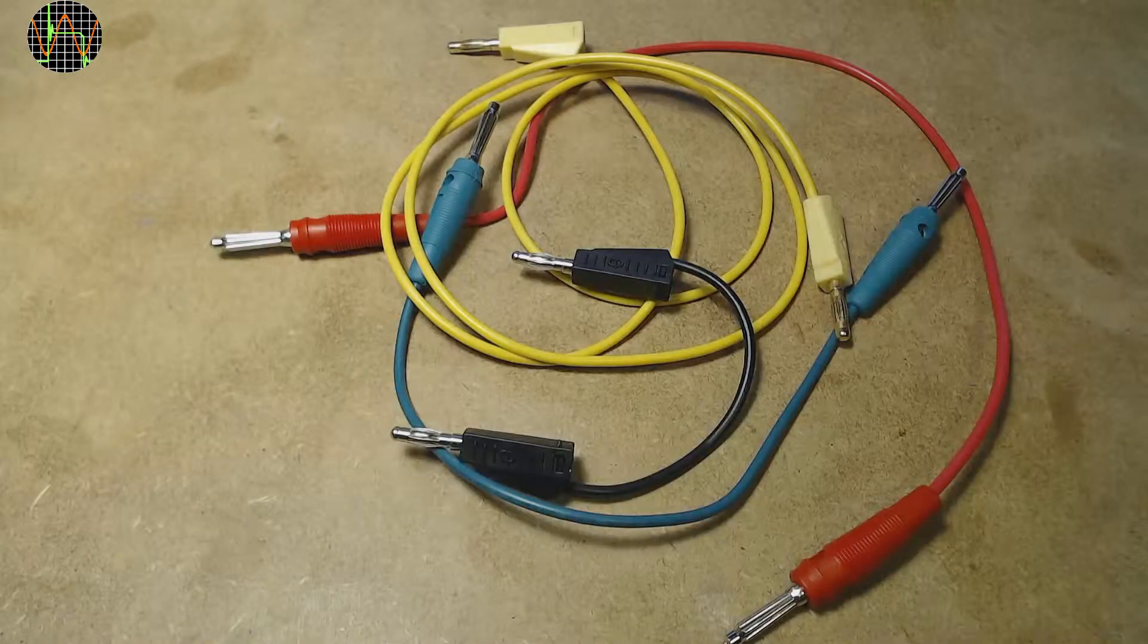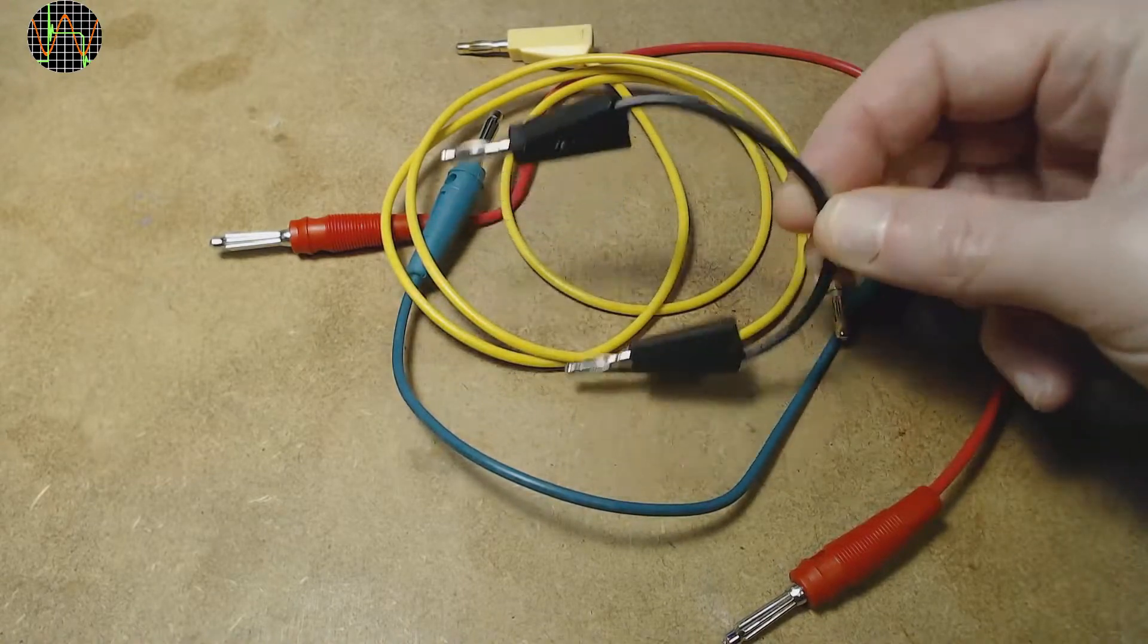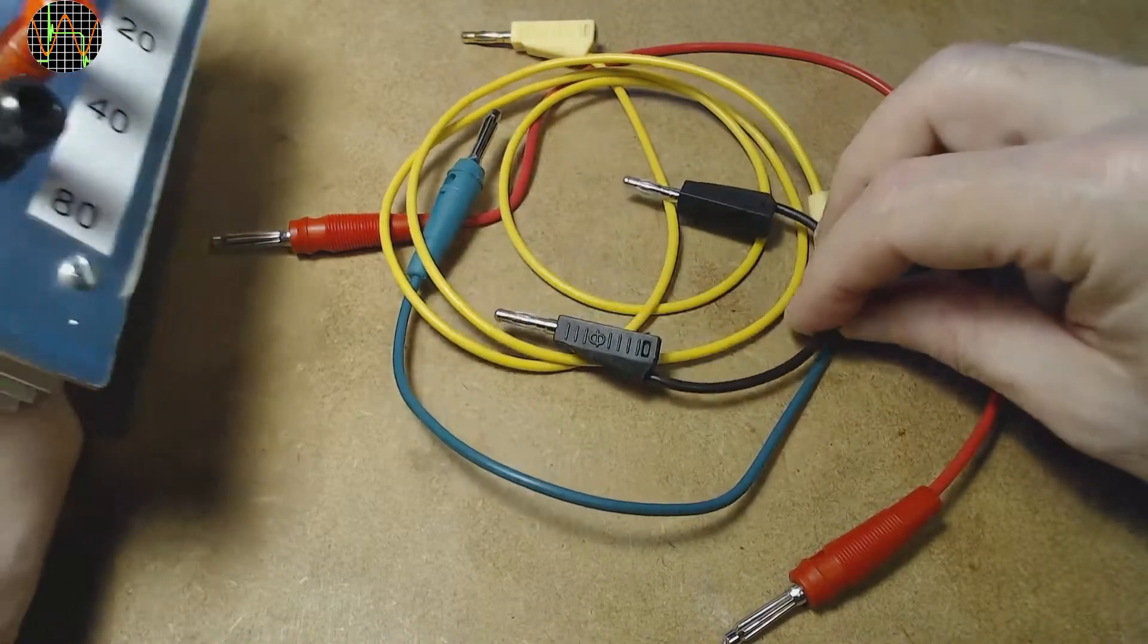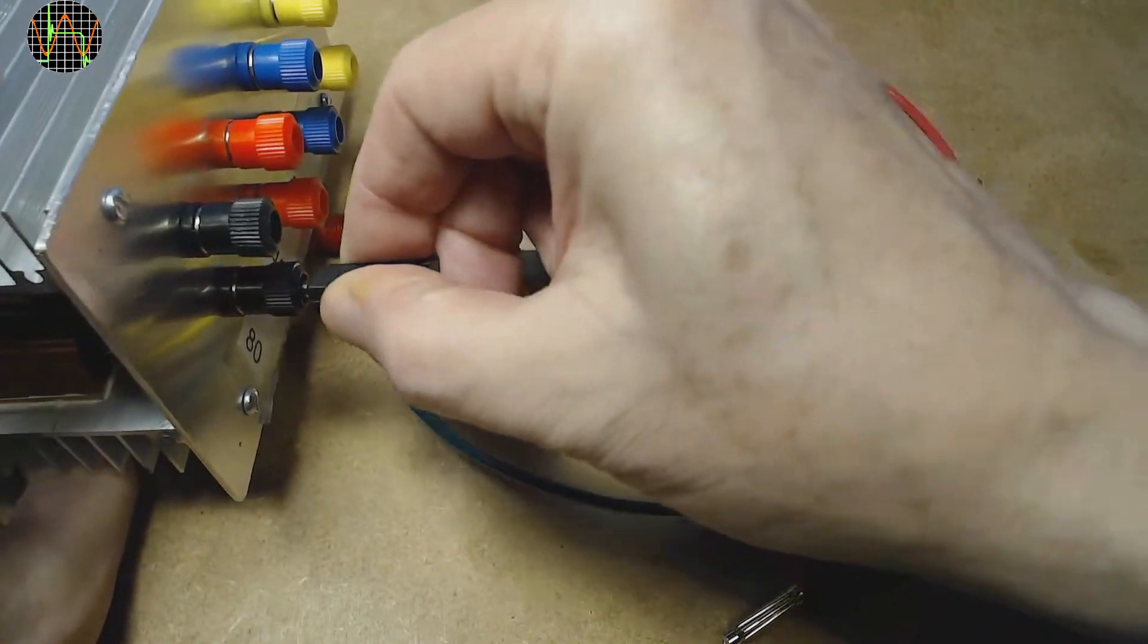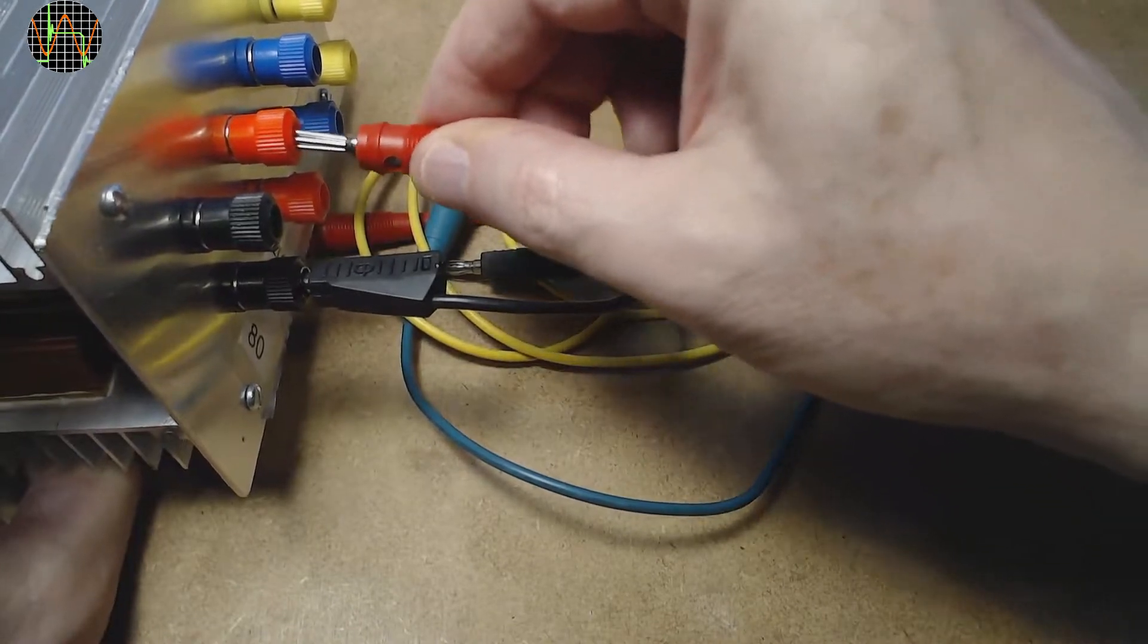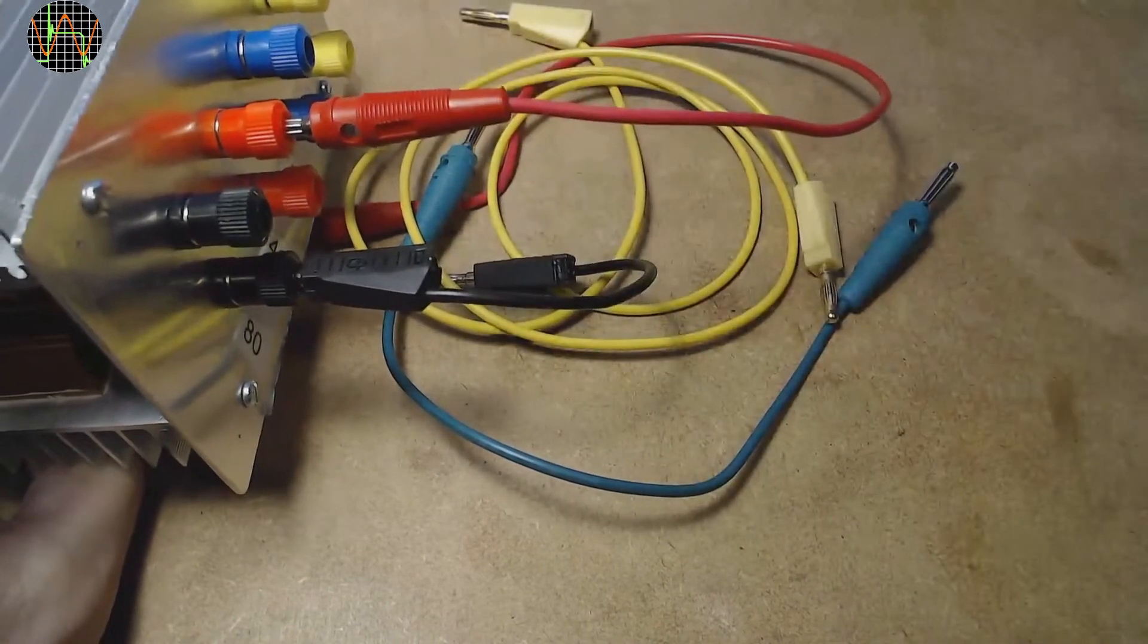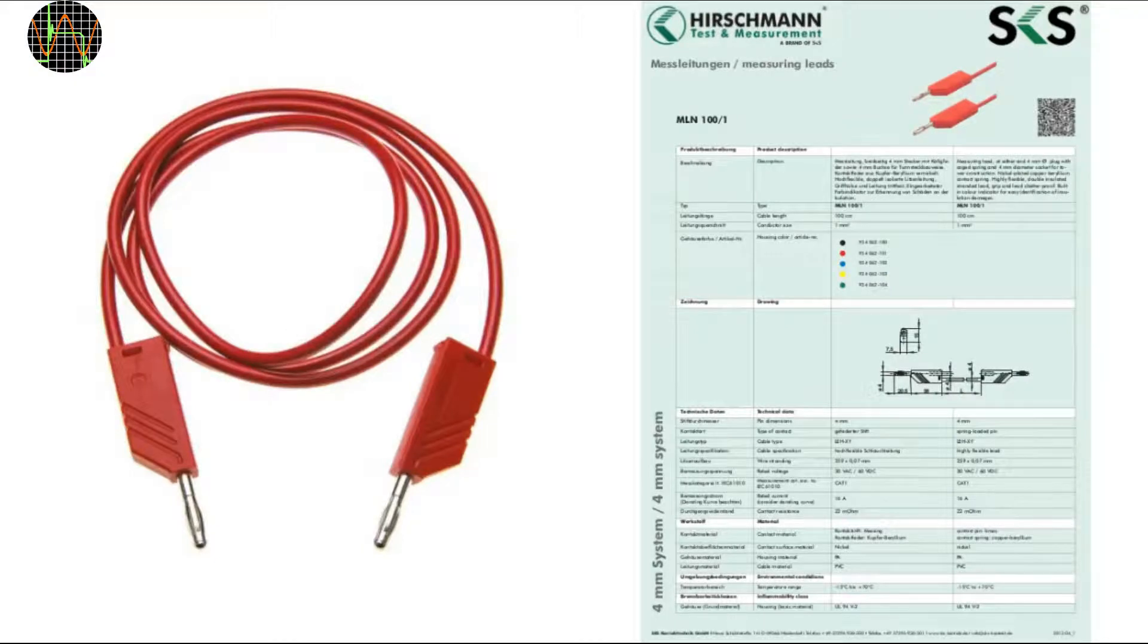The first type of lead I'm using have 4mm banana plugs on each end. Most of my lab items such as power supplies, multimeters and the power resistors in the previous videos all have 4mm sockets or 4mm binding posts, so a couple of leads with 4mm banana plugs on either end are very useful. You could buy ready-made leads and they are offered in a variety of colors and lengths with claims of silicon cables, heat resistance and what not.